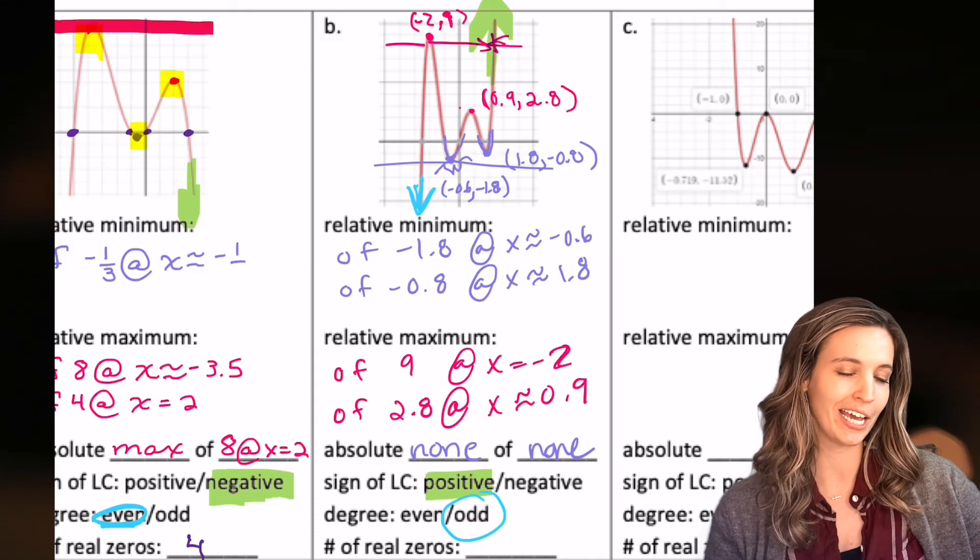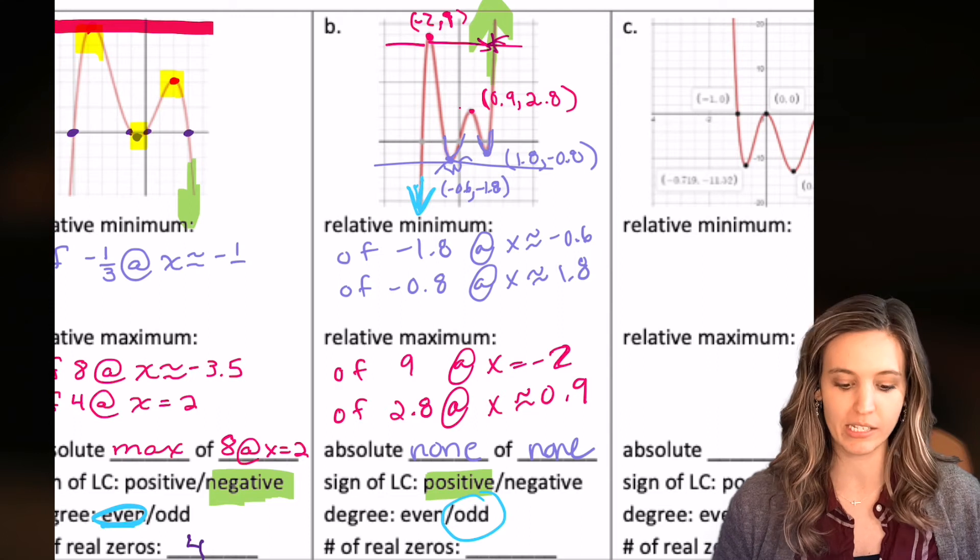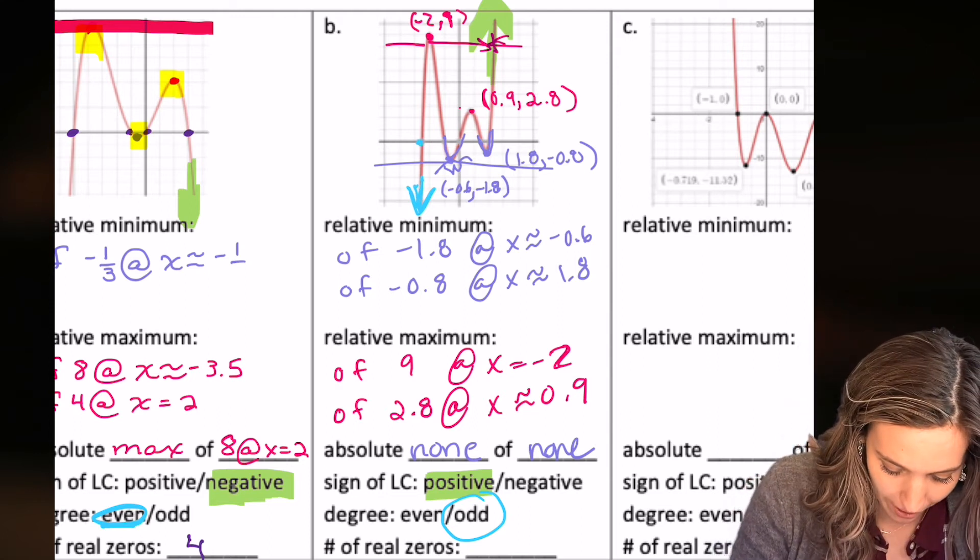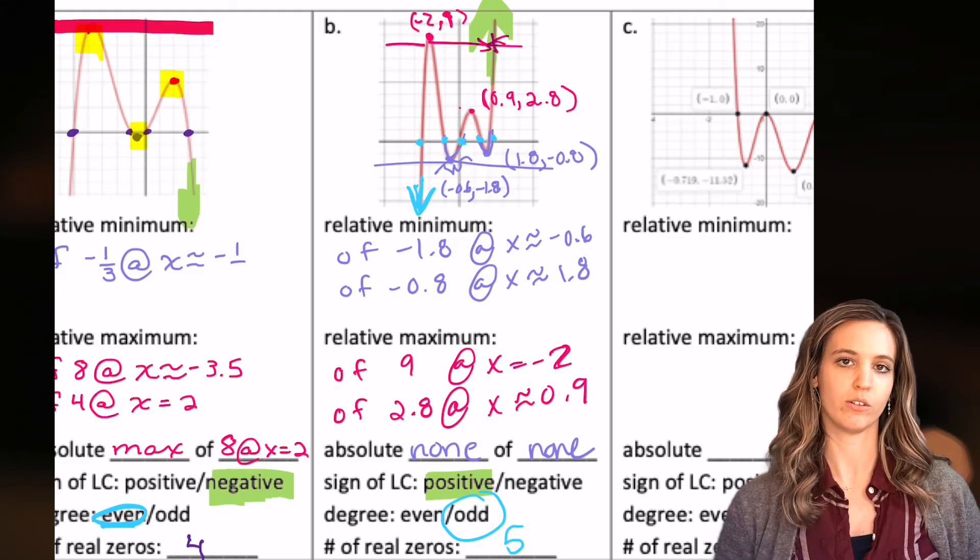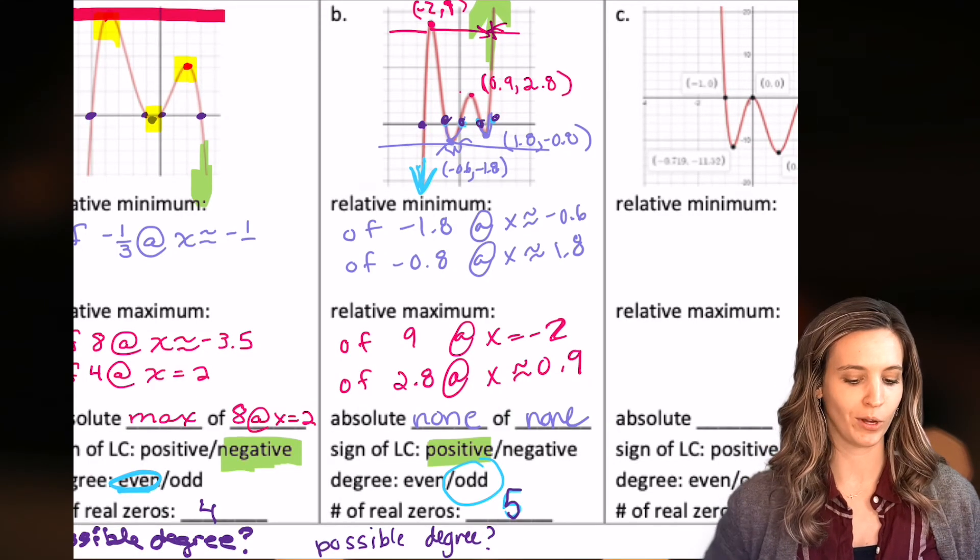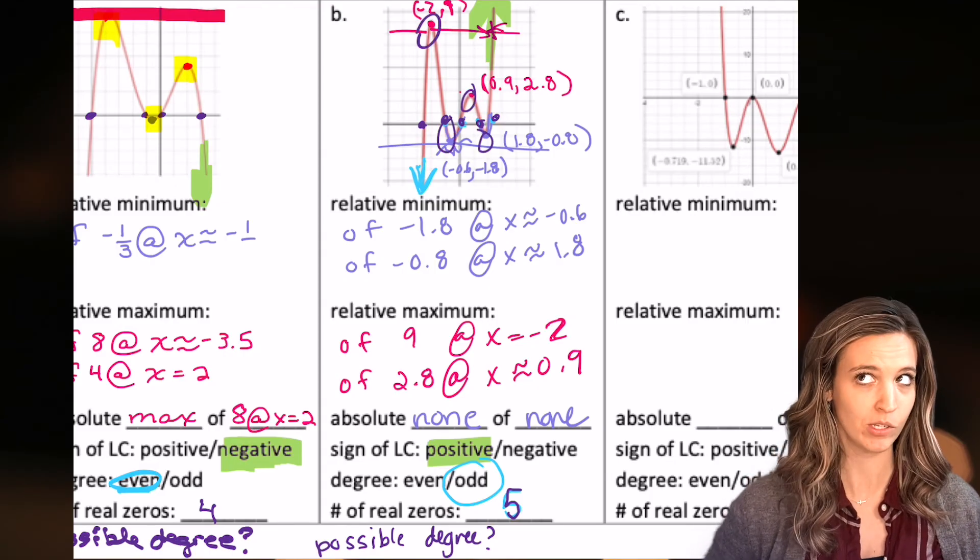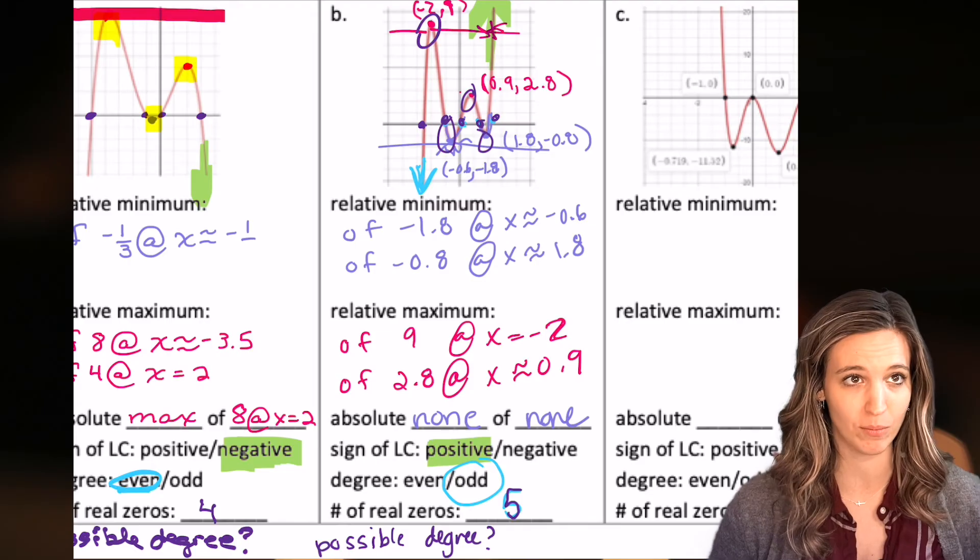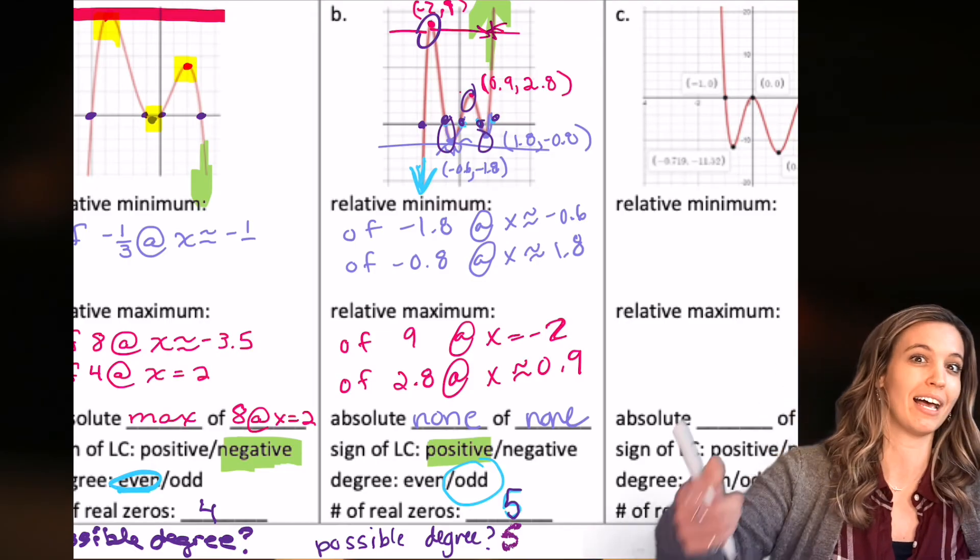I wonder if I could make a guess at the possible degree. We'll do that in a second. Number of real zeros. Let's count. I've got one, two, three, four, five. Five real zeros. All right. So what can my possible degree be? I'm going to use my turning points this time. I turn one, two, three, four times. So I would at least have to be a quintic because the turning points are one less than my degree.